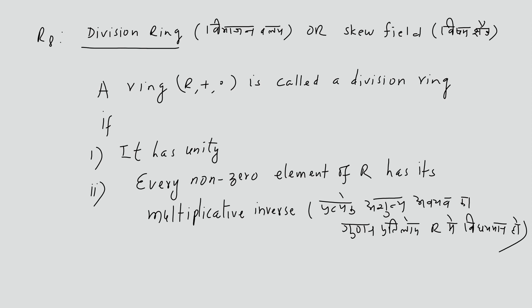R8: Division Ring or Skew Field. (R, +, ·) is called a division ring if it has unity and every non-zero element of R has its multiplicative inverse.